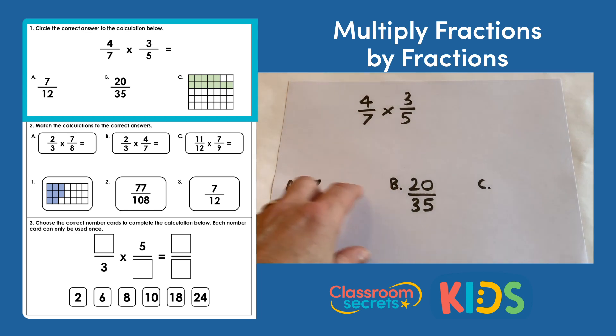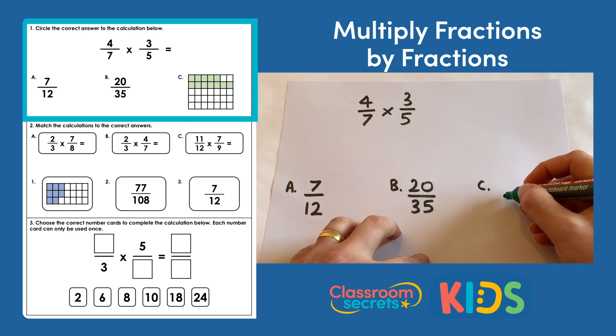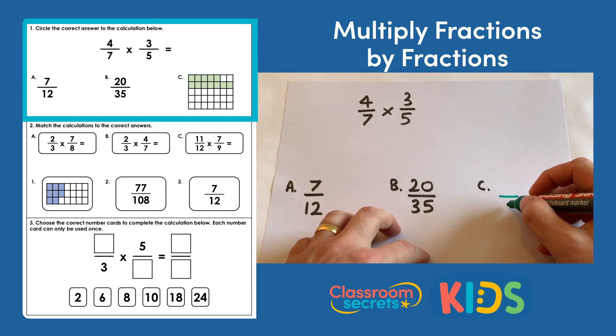We've got A: 7/12, B: 20/35, and C: it's represented by a diagram. If you look at the total number of squares or total number of equal parts of that whole, there are 35.